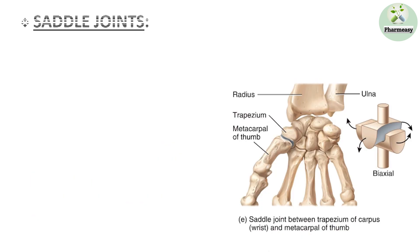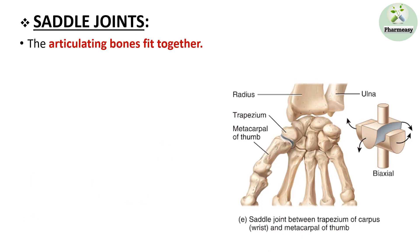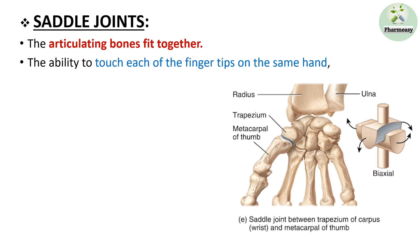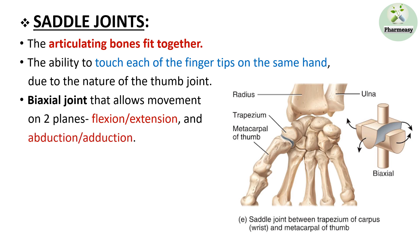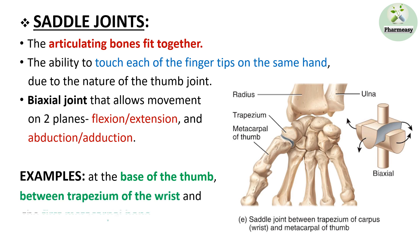The last joint is the saddle joint. In this joint, the articulating bones fit together. The ability to touch each fingertip on the same hand is due to the nature of the thumb's saddle joint. It is a biaxial joint that allows movement on two planes — flexion or extension, and abduction or adduction. These joints are present at the base of the thumb, between the trapezium of the wrist and the first metacarpal bone. The diagram shows the saddle joint between the trapezium and the metacarpal of the thumb.